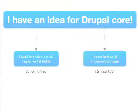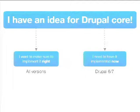There are basically two ways you can choose, based on the version and size of the change you want to make. I've titled these 'I want to make sure to implement it right' and 'I need to have it implemented now.' There are a lot of cases where you need to have it implemented now — I'm involved with a lot of those cases at Acquia and in Drupal Gardens.